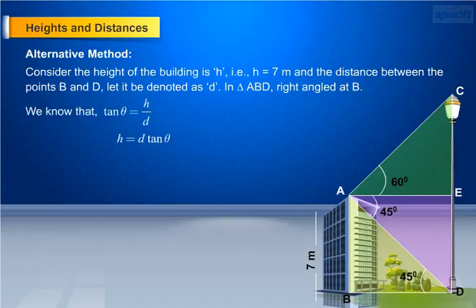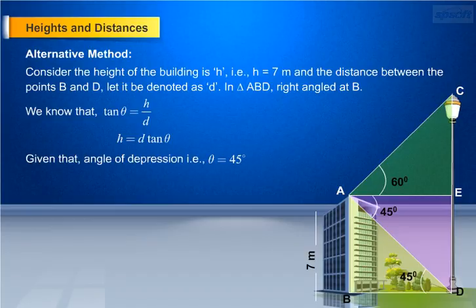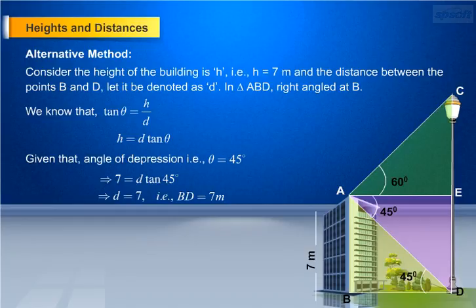We know that tan theta equals H by D, which implies H equals D tan theta. Given that the angle of depression theta equals 45 degrees, we have 7 equals D tan 45 degrees. As tan 45 degrees equals 1, we have D equals 7, that is BD equals 7 meters.